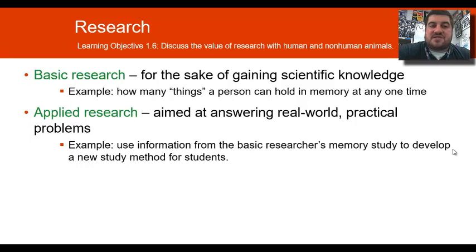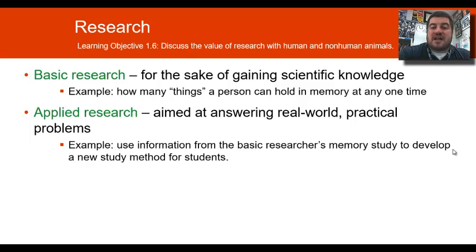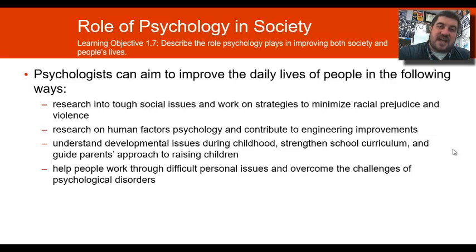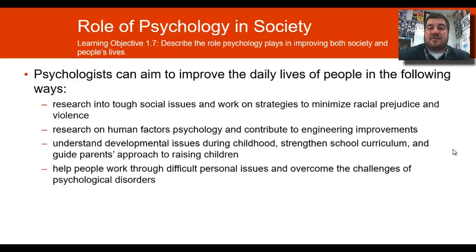There are two kinds of research: basic research, which gains scientific knowledge — such as how many items a person can hold in memory at one time — and applied research, which uses that information to solve a real-world problem, like developing a new studying method for students. Psychologists can also solve tough social issues, and human factors psychology focuses on how people interact with objects and designs. They can also understand developmental issues in childhood and help people work through difficult personal issues.